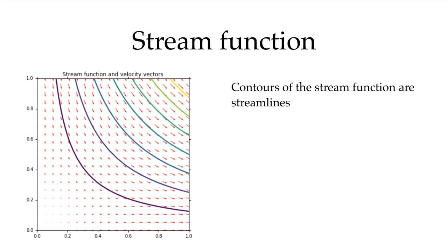If I go up to a higher streamline, I've integrated the flow further and get a higher value of psi. If I take two streamlines and subtract their psi values, I get the volume flow rate passing between them. Flow cannot cross a streamline because it is everywhere tangent to the velocity vector — there's no velocity component normal to the surface. So the flow rate between any two streamlines is fixed, and subtracting the two stream function values gives that volume flow rate directly.